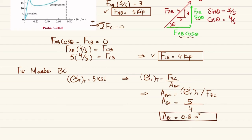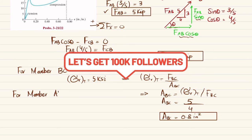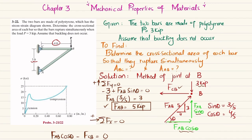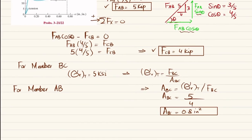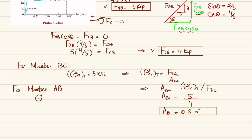Similarly we will find for member AB. So you can see that this member AB will be in compression. So we will use this stress strain diagram and sigma rupture for compression here is 25 ksi. And we know that sigma rupture for compression is equal to FAB divided by area of AB.